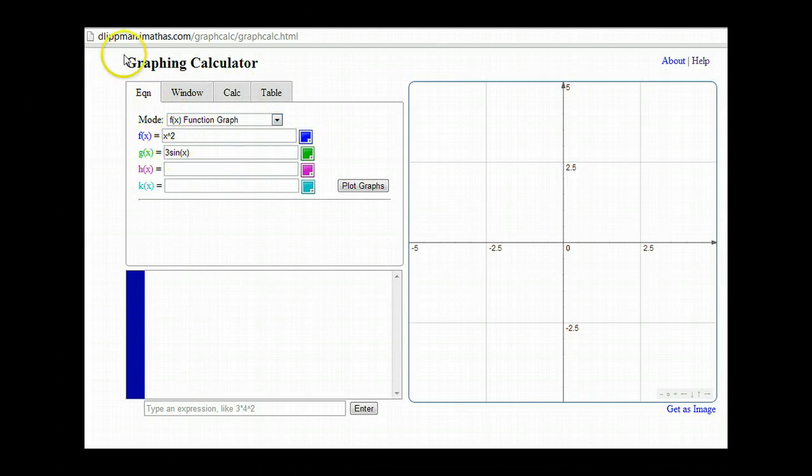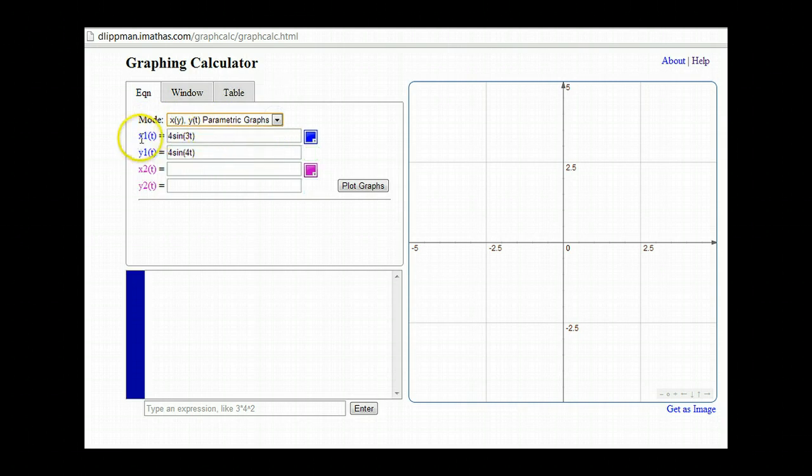All right, so as you can see I've opened to that website with the graphing calculator. My mode, I don't want a function graphing calculator, I want parametric and notice it will give you x of t and y of t.